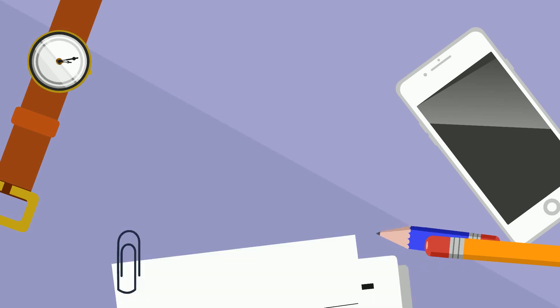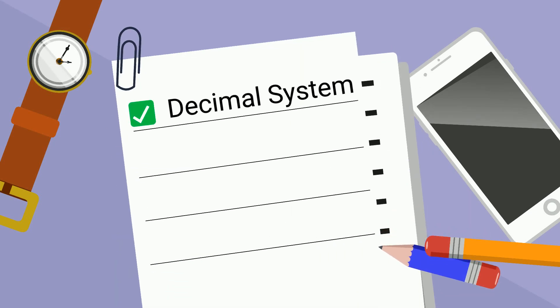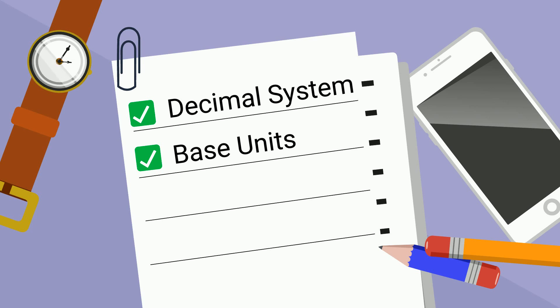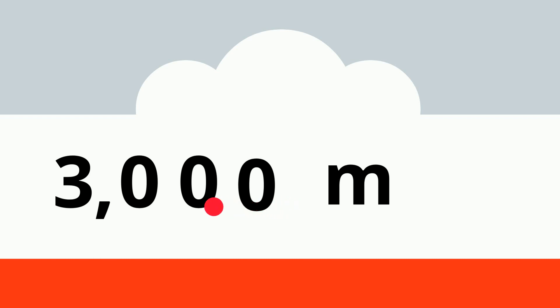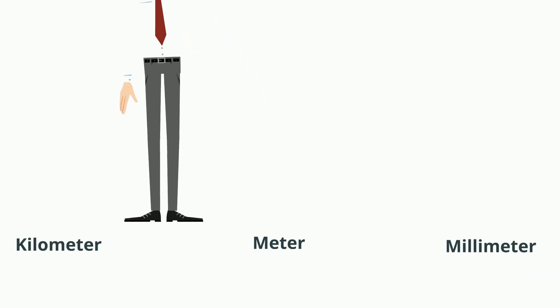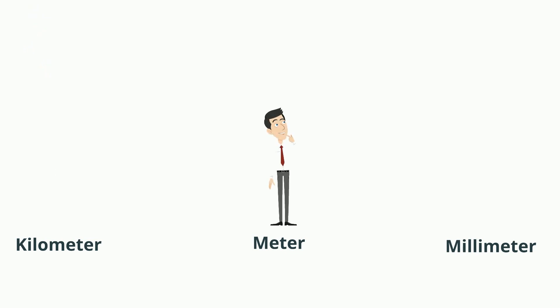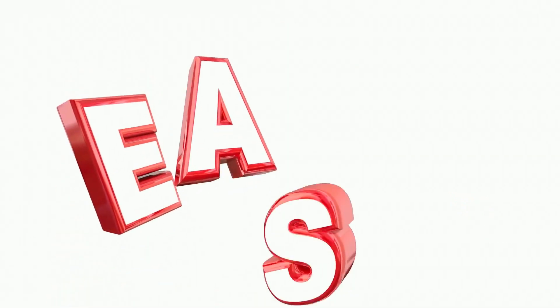I will attempt to take something that can be very confusing and simplify it. First, the metric system is a decimal system. Decimal base means that all the units are based on powers of 10. For example, 3,000 meters equals 3 kilometers — you are moving the decimal to the left or right, depending on if you are getting bigger or getting smaller. This just makes conversion within the system easy.